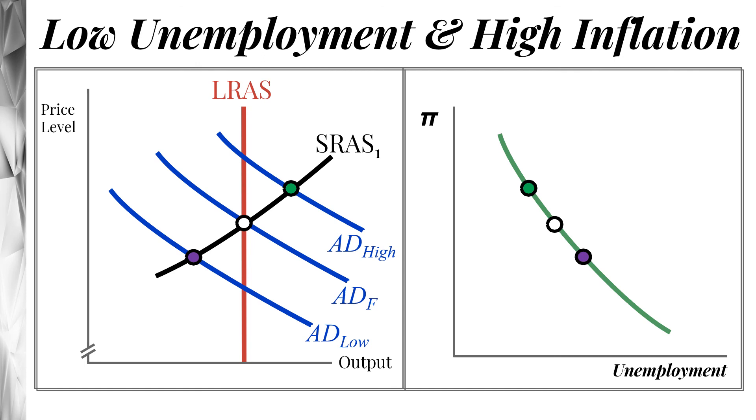And so the Keynesian consensus at the time was we can move aggregate demand around and get this trade-off along the Phillips curve. We can pick which spot do we want. Do we want to have this spot on our Phillips curve? Or do we want to have some other spot, say the purple spot down here on the Phillips curve? The Phillips curve was a menu for us to choose between the trade-offs of inflation and unemployment. And we did that by monetary policy with moving aggregate demand out or moving it back.